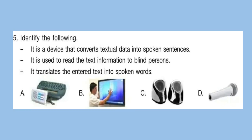Question 5: Identify the following — it is a device that converts textual data into spoken sentences. It is used to read text information to blind persons and translates the entered text into spoken words. Look at the options carefully and select your answer. The correct answer is option A.